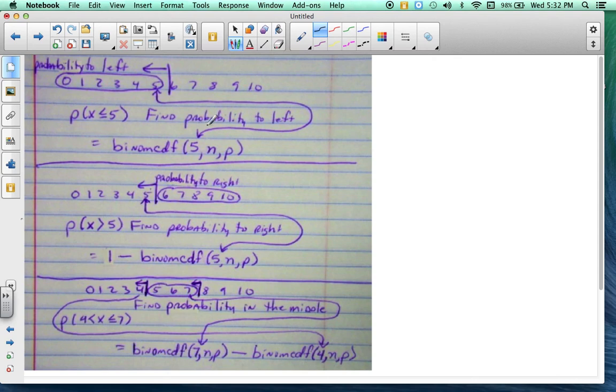And then finally, let's say we have, you have the probability that x is less than 5. So we're going to do this right here. x less than or equal to 5. So I wrote out numbers 0 through 10. Now notice this is the probability to the left. We're looking for the probability to the left. So finding the probability left, we just do binomial CDF 5NP. So whatever NNP is, but that 5 goes right here.